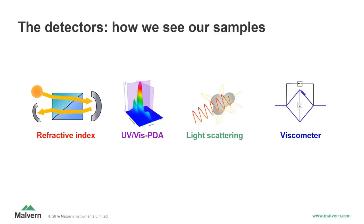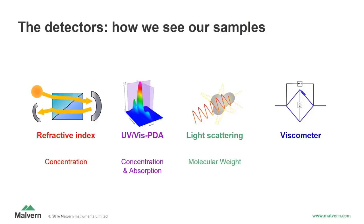The refractive index detector responds to sample concentration. The UV-VIS or photodiode array detector responds to sample concentration and light absorption. The light scattering detector responds to the sample's molecular weight, and the viscometer detector responds to the intrinsic viscosity of the sample in solution, which is influenced by the sample's molecular density. Next, we'll take a closer look at each detector individually.